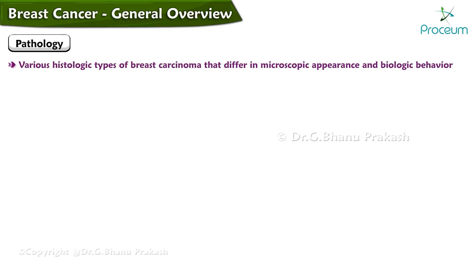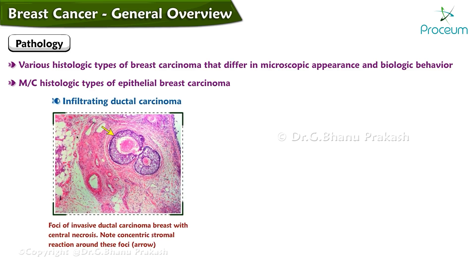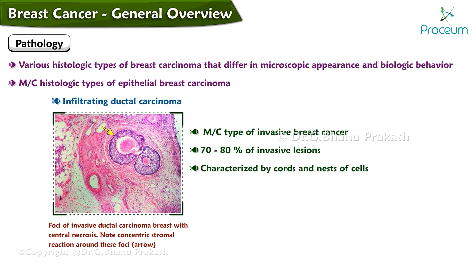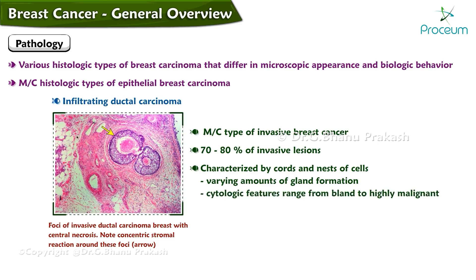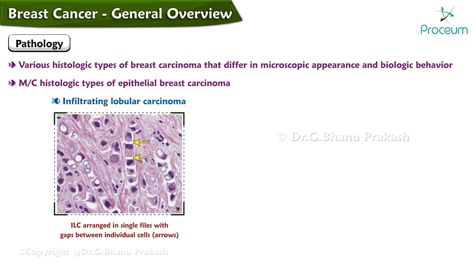There are various histologic types of breast carcinoma that differ in microscopic appearance and biologic behavior. Infiltrating ductal carcinomas are the most common type of invasive breast cancer, accounting for 70 to 80 percent of invasive lesions. These lesions are characterized by cords and nests of cells with varying amounts of gland formation and cytologic features ranging from bland to highly malignant.